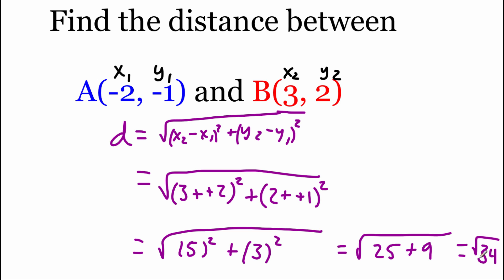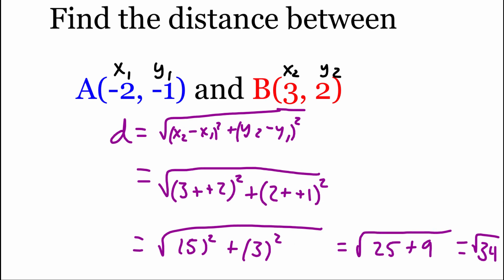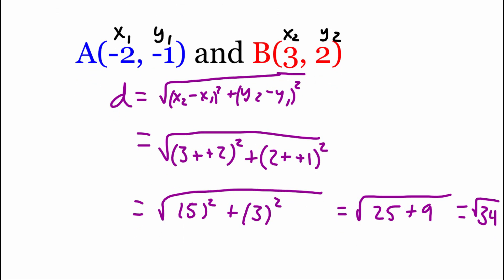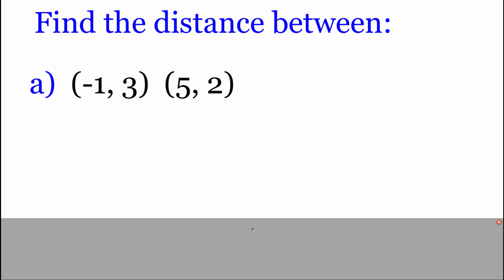If we wanted to, we could plug this into our calculator and get a decimal approximation. If you type in the square root of 34, going to two decimal places, that would be 5.83. We've got a couple more examples — feel free to pause the video at any time and then pick back up to check your answers.